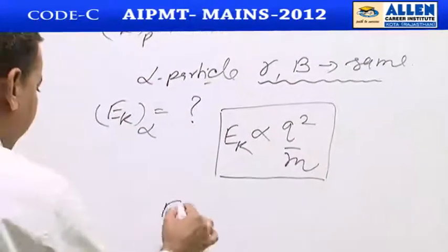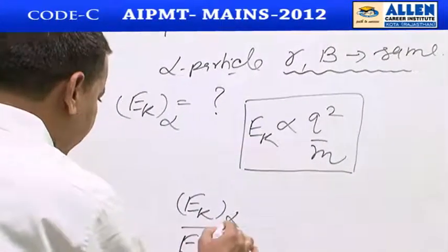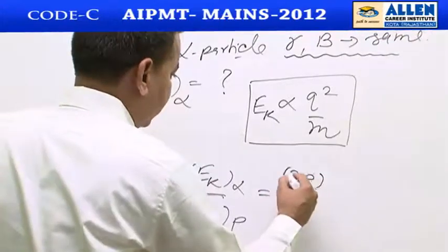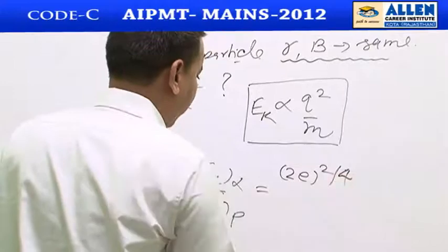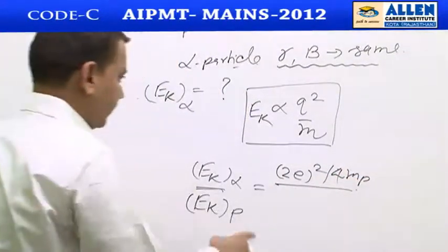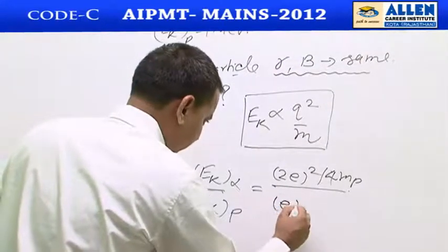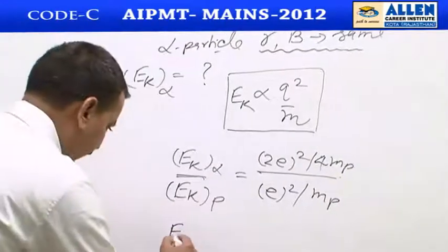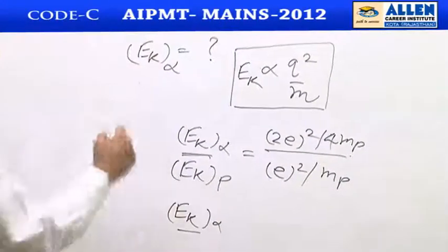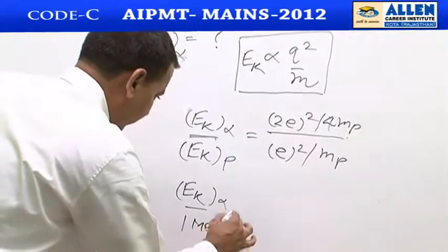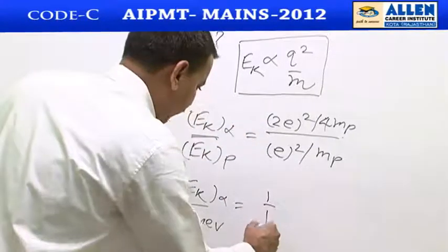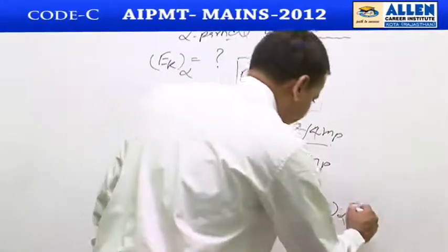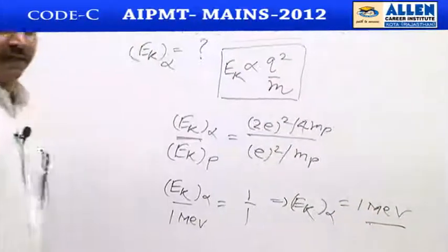We compare q²/m for the alpha particle and the proton. For the alpha particle: charge = 2e, mass = 4mp, so q²/m = 4e²/4mp = e²/mp. For the proton: charge = e, mass = mp, so q²/m = e²/mp. The ratio is 1, so the kinetic energy of the alpha particle is also 1 mega electron volt. This is the right answer.